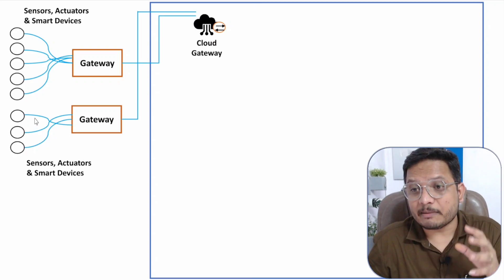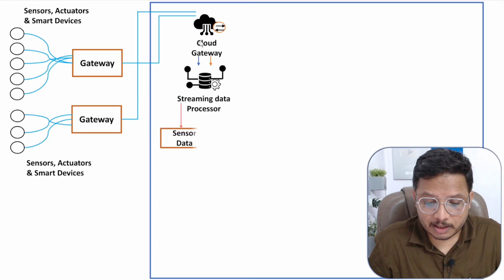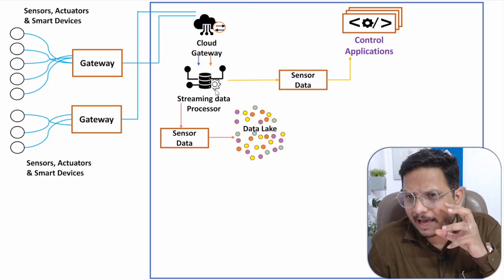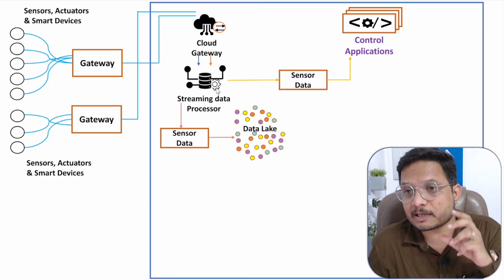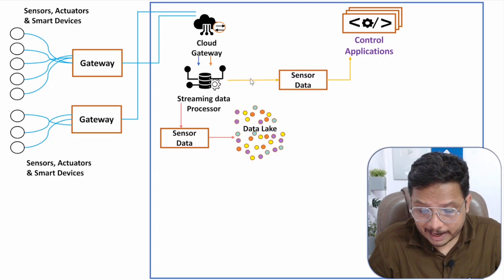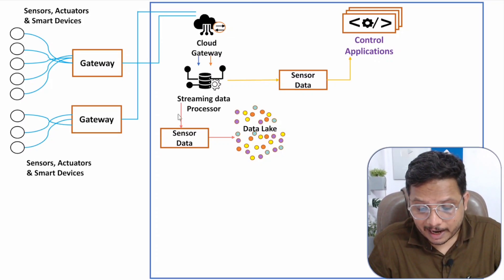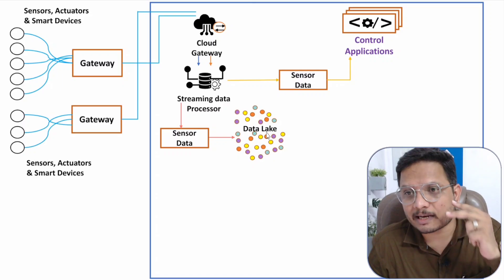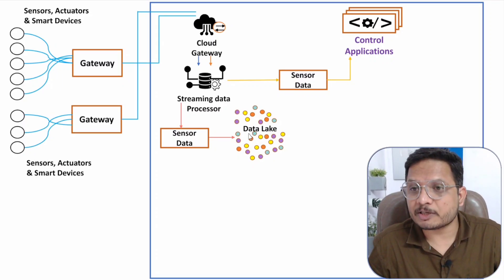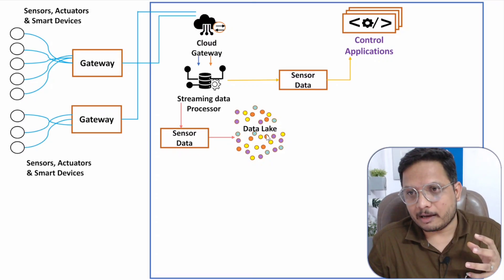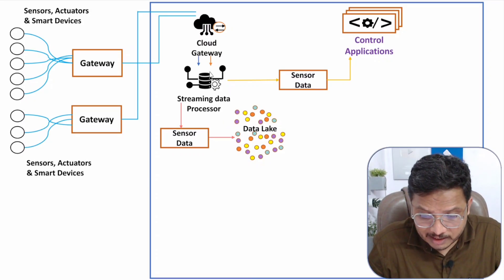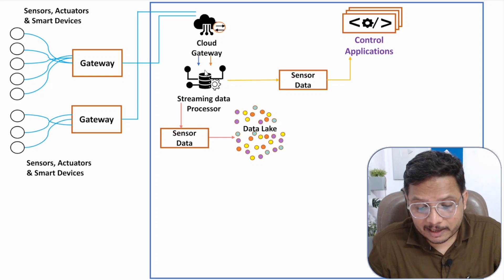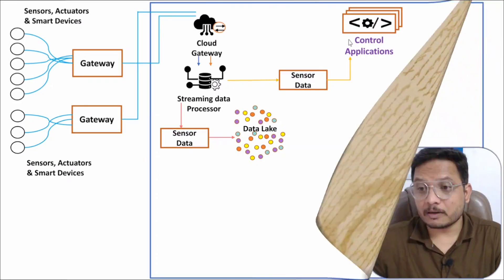The streaming data processor receives data from the cloud gateway and ensures smooth transition of data exchange. It forwards data both to the control application and to the data lake, where data is stored in its raw, natural form.